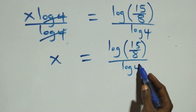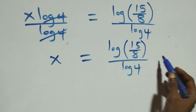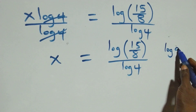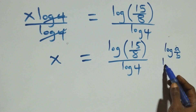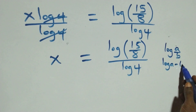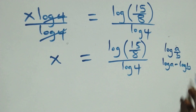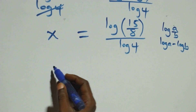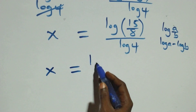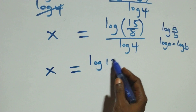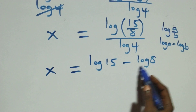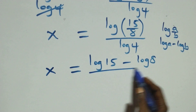From here, this follows the log rule: when we have log of a over b, this is the same thing as log a minus log b. So this becomes x equals log 15 minus log 8, all over log 4.